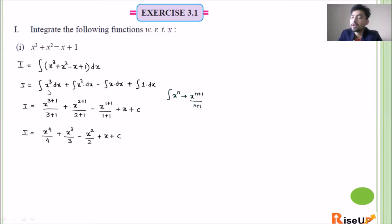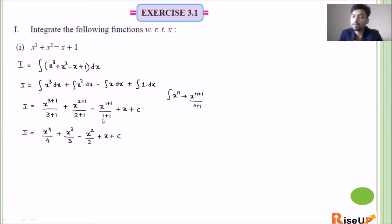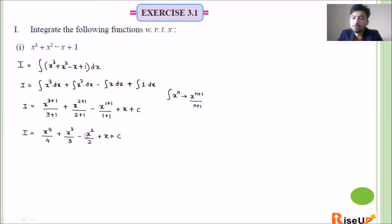Now we have to use our formula. The integration of xⁿ is x^(n+1) upon (n+1). So x³ integration is x^(3+1) upon (3+1), plus x² integration is x^(2+1) upon (2+1), minus x^(1+1) upon (1+1). Now the integration of 1 dx: remember, the derivative of x is 1, so integration of 1 is x. So finally we get x⁴/4 + x³/3 - x²/2 + x + c.